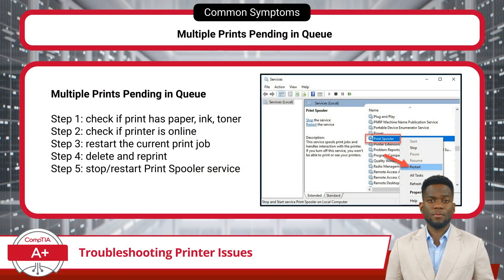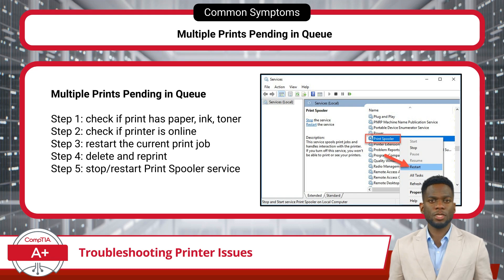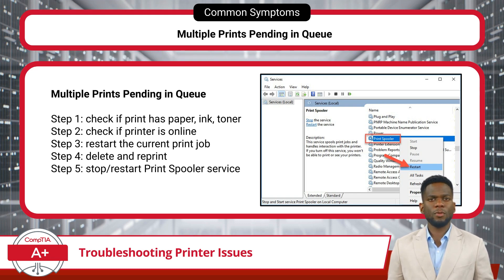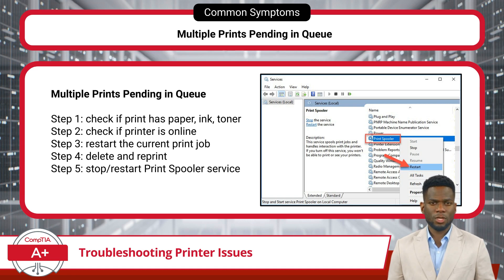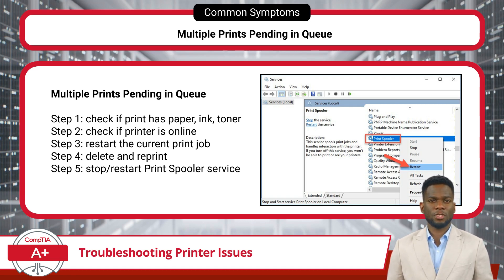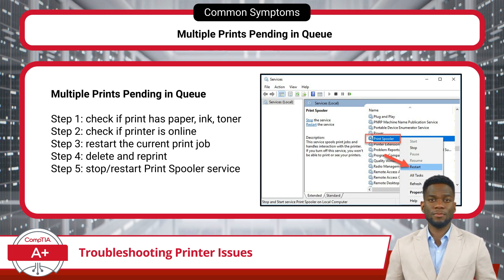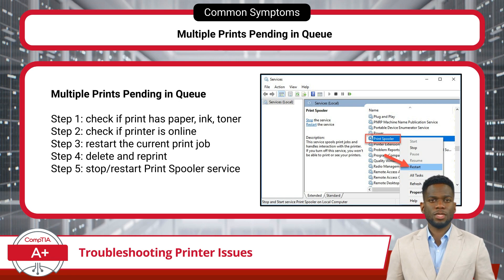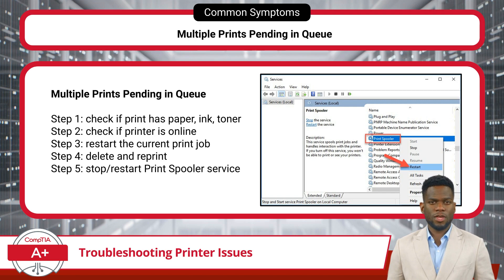When a print queue is backed up, there are multiple print jobs waiting or pending but not currently printing. This can occur if the printer is out of paper, ink, or toner; if the printer is offline or experiencing connectivity issues; or if errors occur while processing a specific print job. To address this in Windows, go to Windows Settings to access the printer and open its print queue, then restart the current job. If that does not work, delete the job and try again. If you cannot delete it, stop and restart the print spooler service.